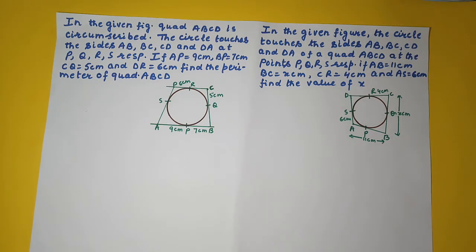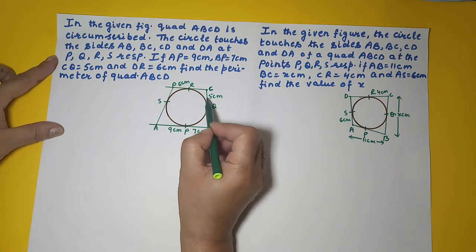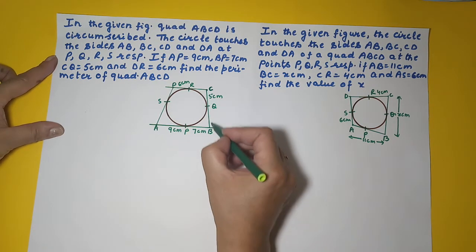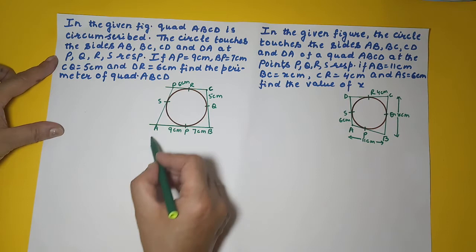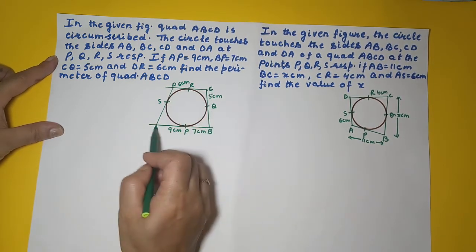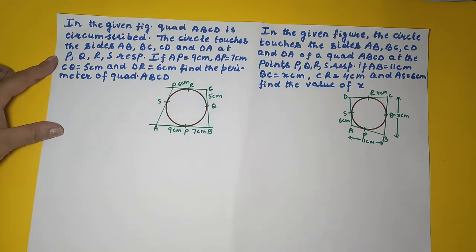In this video, we are going to continue with the tangent properties of circles. In the given figure, we have quadrilateral ABCD in which we have a circle, such that all the sides of the quadrilateral are tangents to this circle.